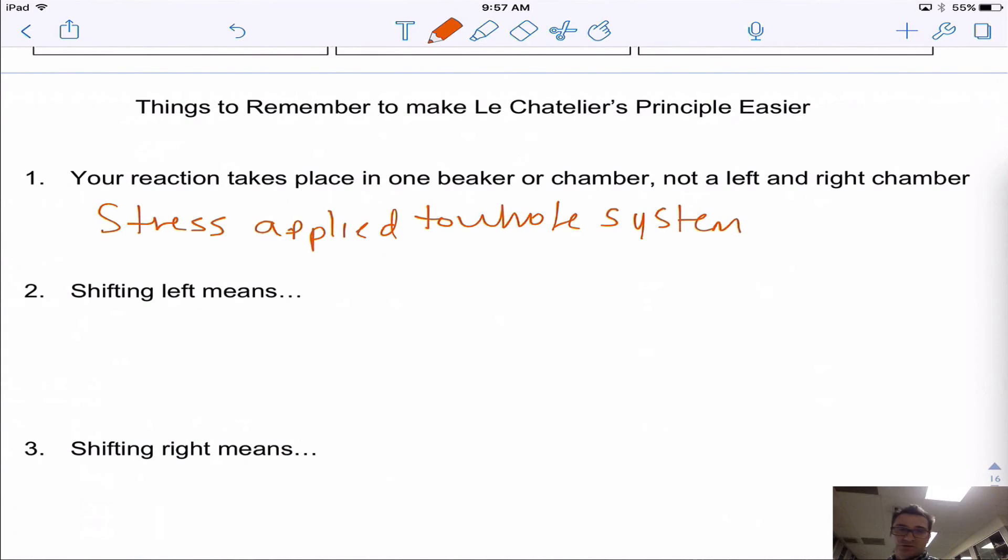Things to remember about shifting is that when you shift left, that means that the reverse reaction is favored. That means that relative to the forward reaction, the reverse reaction will be occurring faster. That could happen because the forward reaction slows down or that could happen because the reverse reaction actually does speed up, but either way the reverse reaction is going to be favored. What this also means is that the reactant concentration will increase and the product concentration will decrease.